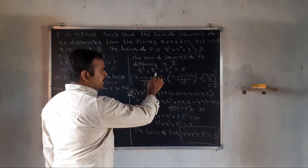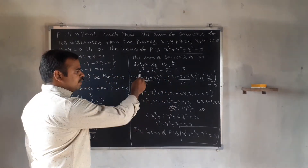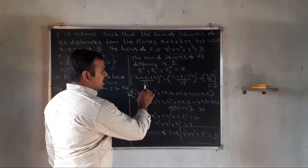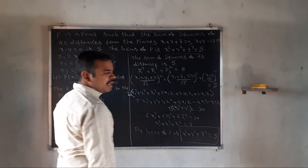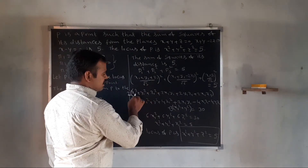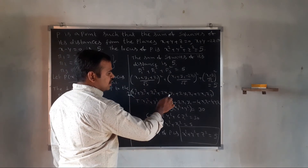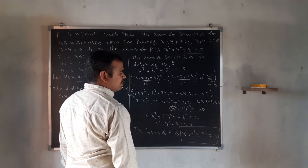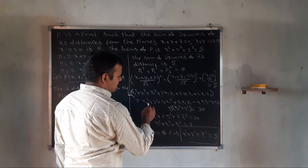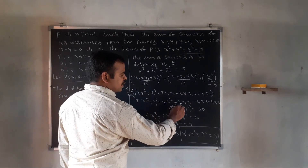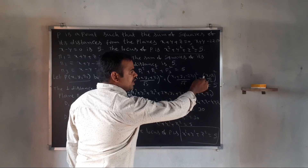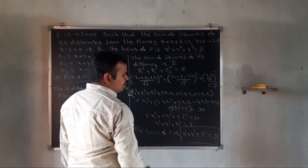Setting d1 square plus d2 square plus d3 square equal to 5. Taking LCM equal to 6: 2 into x1 plus y1 plus z1 whole square, expanding gives x1 square plus y1 square plus z1 square plus 2x1 y1 plus 2y1 z1 plus 2x1 z1, plus the expansion of x1 plus y1 minus 2z1 whole square, plus 3 into x1 square plus y1 square equals 30.